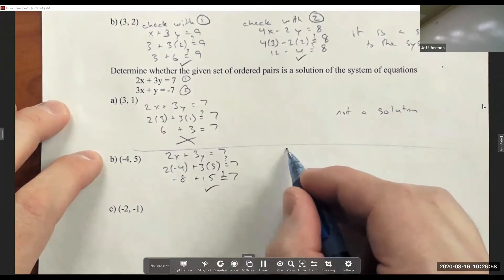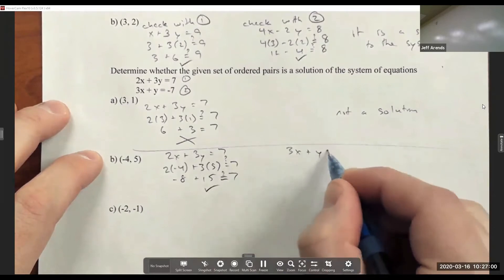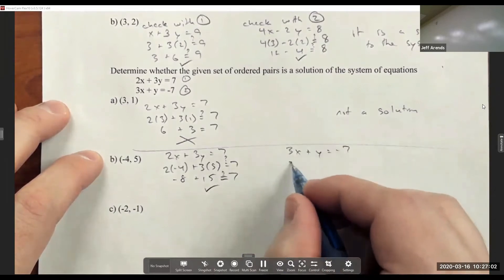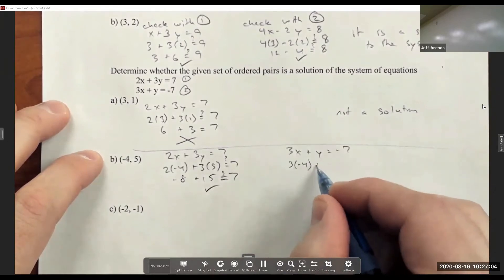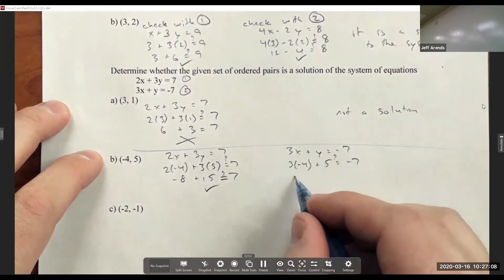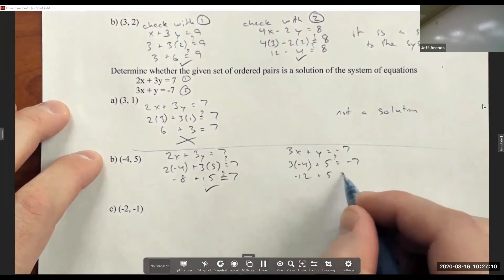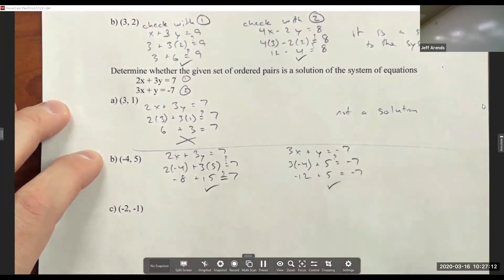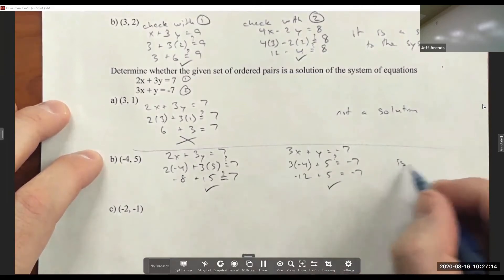Let's check it with the second equation. 3x plus y equals negative 7. That's 3 times negative 4 plus 5 equals negative 7, which is a question mark. Negative 12 plus 5 equals negative 7. That one works out. So this one is a solution.